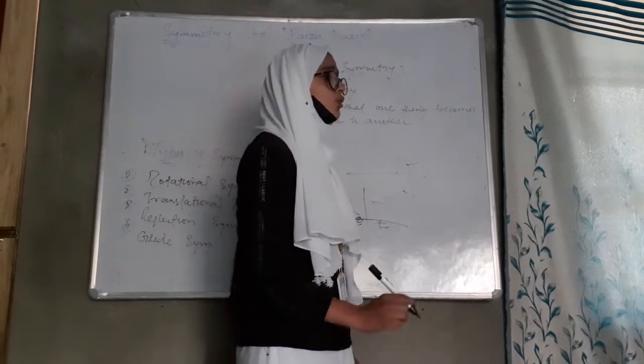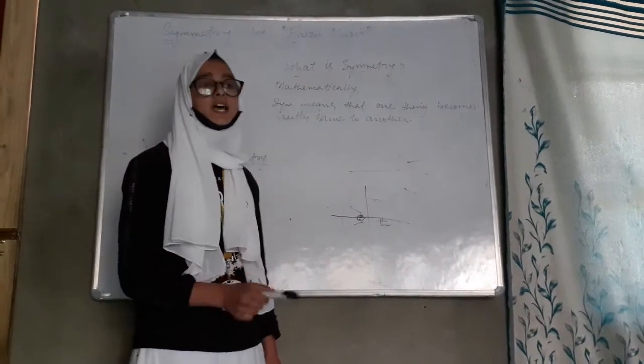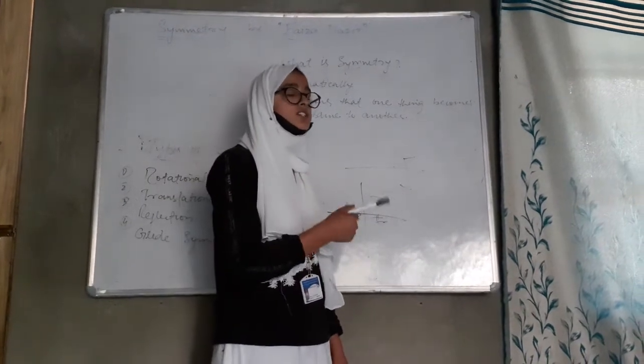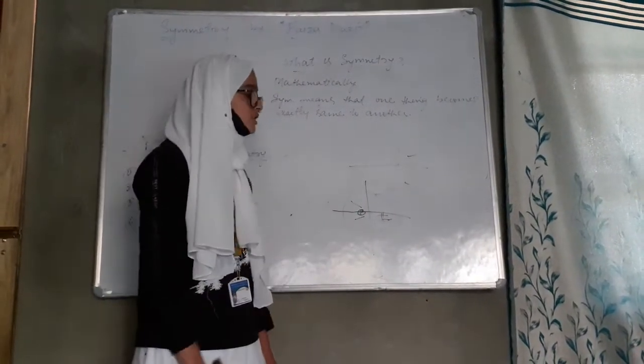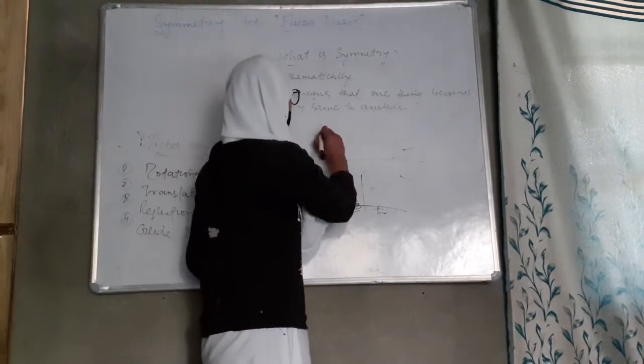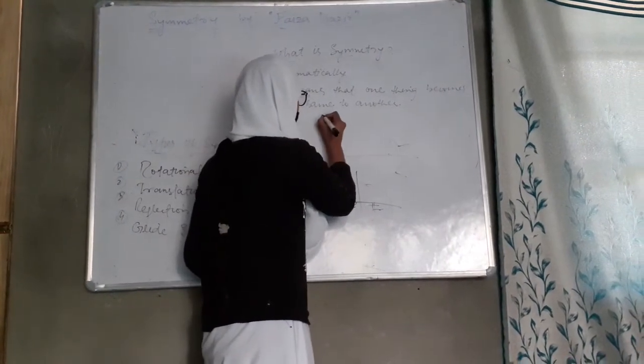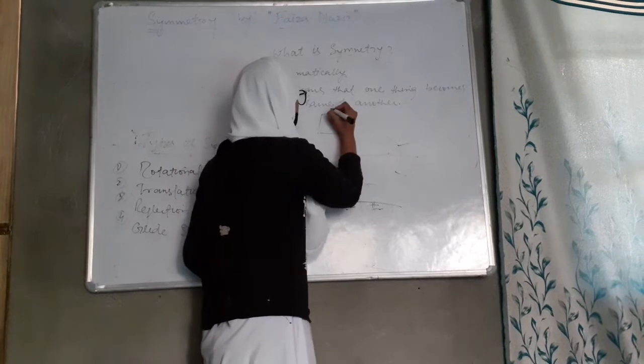What is rotational symmetry? Rotational symmetry means that at 360 degrees we rotate it. Suppose if we take a square, this is the same.